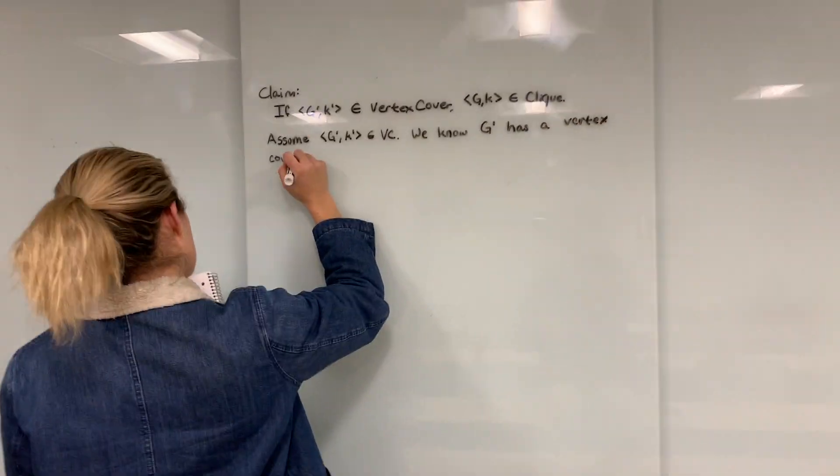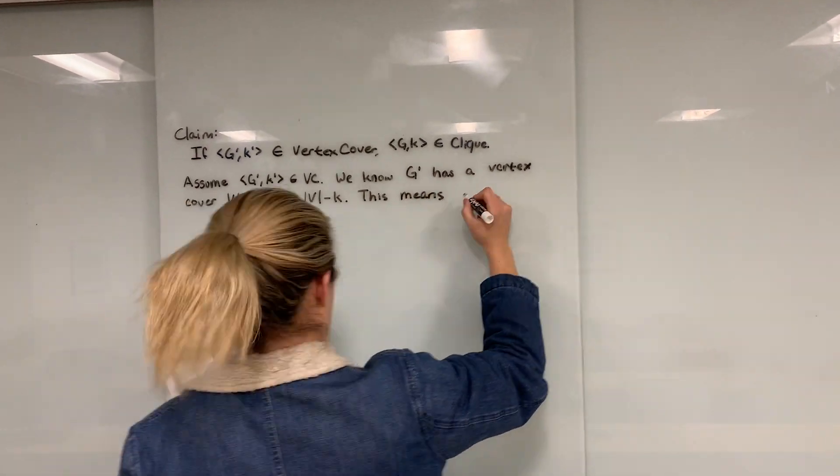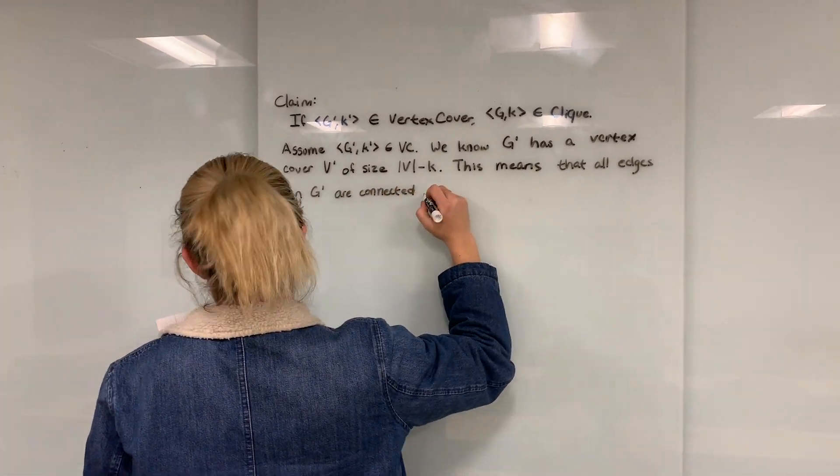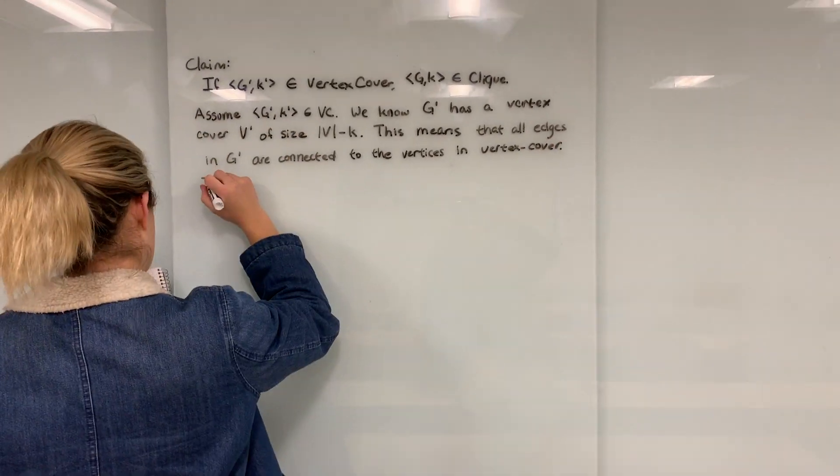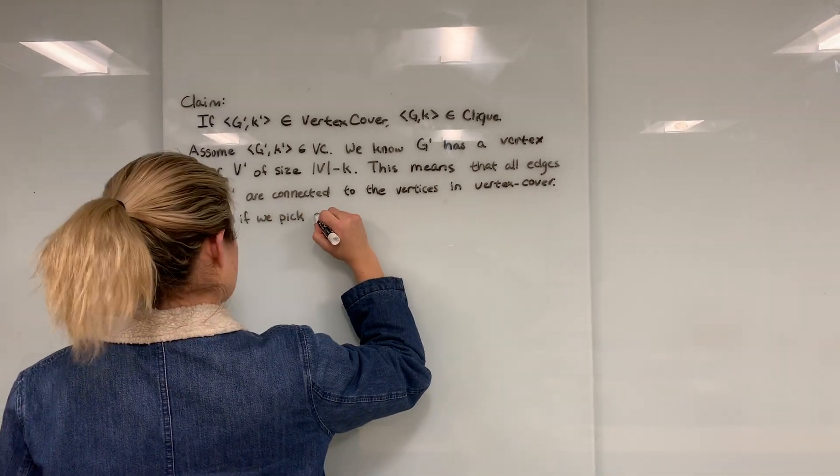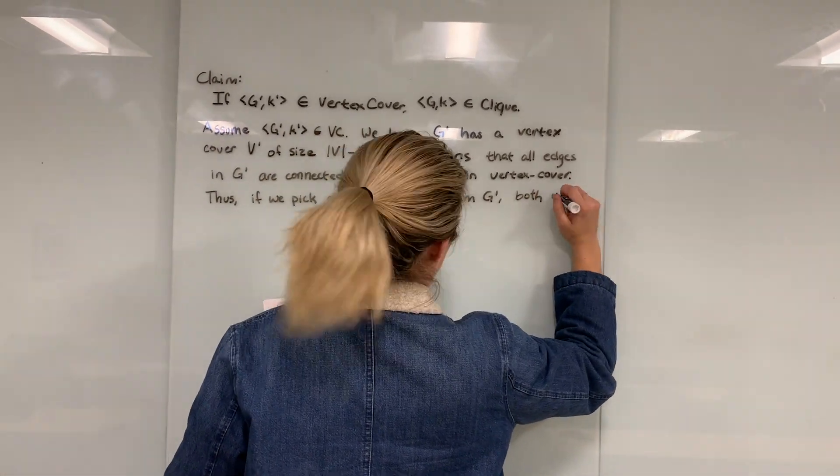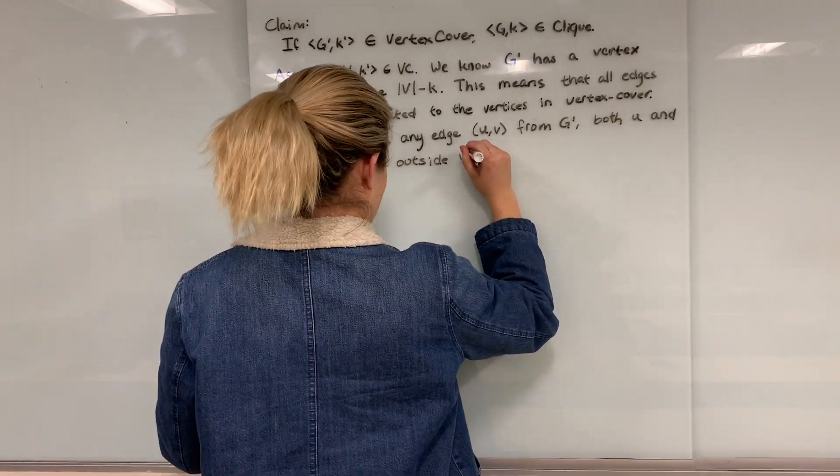This means that all edges in G' are connected to the vertices in the vertex cover. Thus, if we pick any edge Uv from G', both U and V cannot be outside V'. This means all edges Uv, such that both U and V are outside the set V' are in G, meaning these edges are a clique of size K.